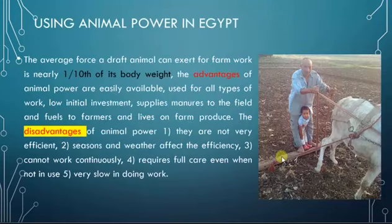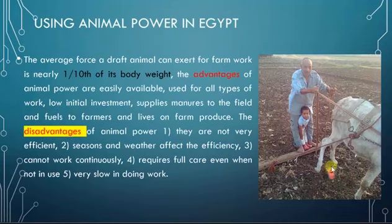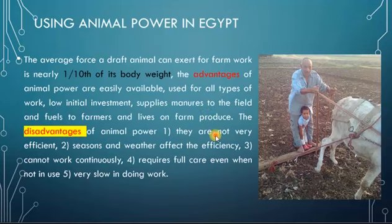Animal power is still used in agricultural work in Egypt till nowadays. The animal can work or can pull a weight about 1/10 of its body weight. Of course, there are advantages and disadvantages for animal work. Animal work can do tractive work more than stationary work — we will talk about those types of work in the next section.